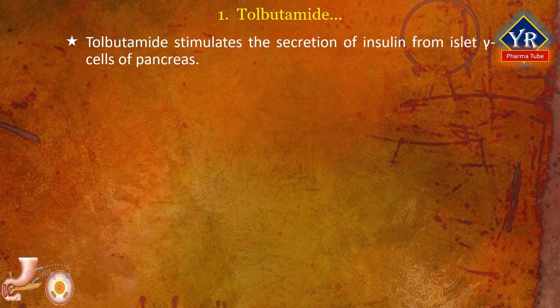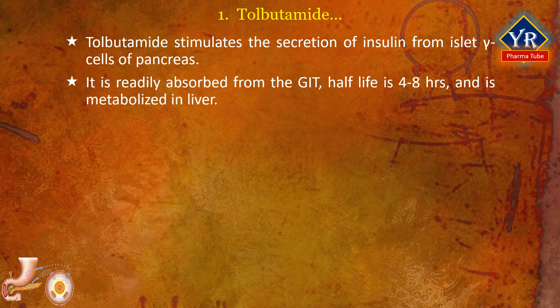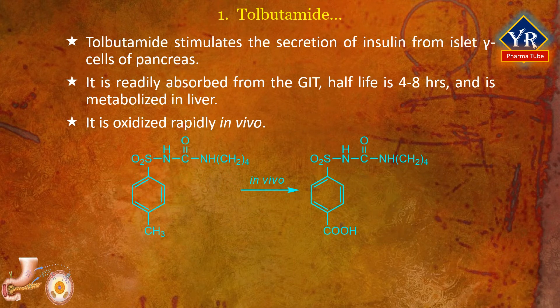Tolbutamide stimulates the secretion of insulin from islet beta cells of the pancreas. It is readily absorbed from the gastrointestinal tract. Its half-life is 4 to 8 hours. It is metabolized in the liver. Its duration of action is short, that is 6 to 10 hours, due to its rapid metabolism, so it is safe for use in older people. It is oxidized rapidly in vivo to 1-butyl-3-para-carboxyphenyl sulfonylurea, which is an inactive compound. It does not undergo acetylation like antibacterial sulfonamides, as it does not have a para-amino group.